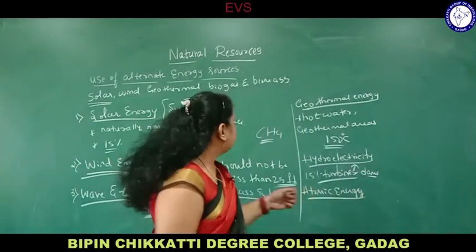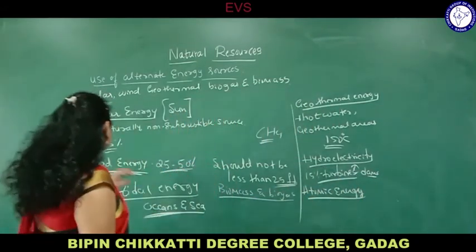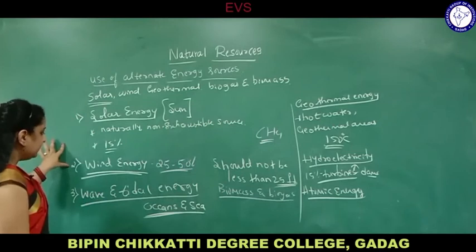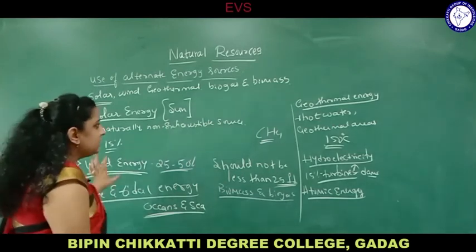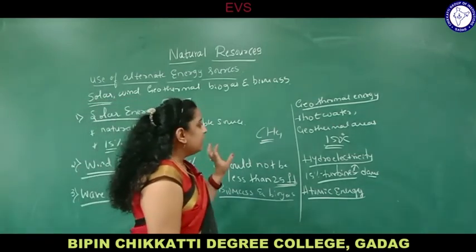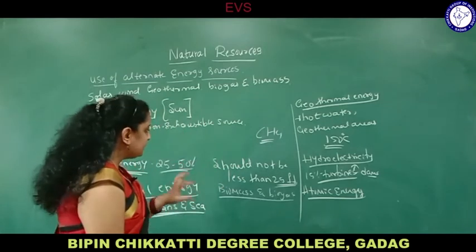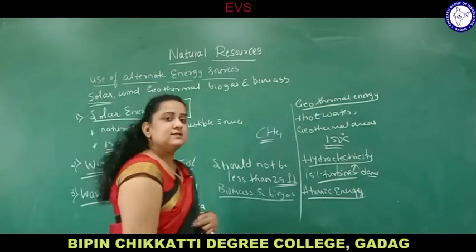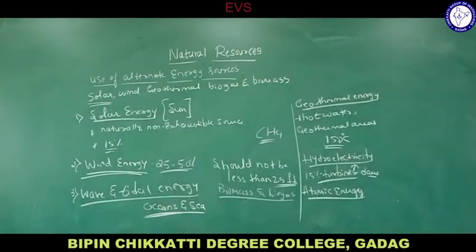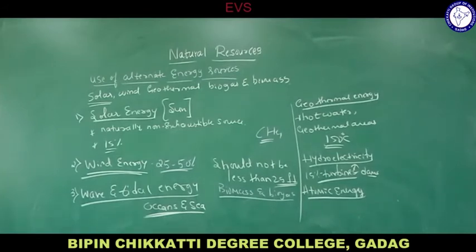So this is all about the different alternative sources of energy: solar energy, wind energy, wave and tidal energy, geothermal energy, hydroelectricity, atomic energy, biomass and biogas. These are all the alternative sources of energy by which we can reduce the consumption of energy.